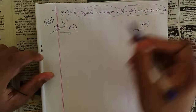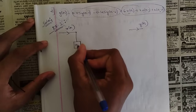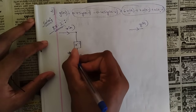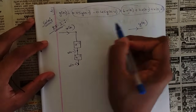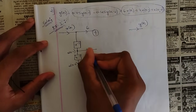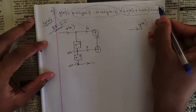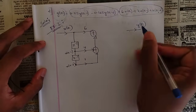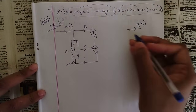Since we have terms up to x(n-2), we need to draw two delays on the input side: one z-inverse and one more z-inverse. From these delay points we get x(n-1) and x(n-2). The coefficient of x(n) is 6, so write 6 at the summer. The coefficient of x(n-1) is 7, requiring one more summer. The coefficient of x(n-2) is 1. That completes the input side block.